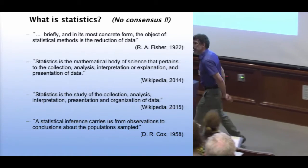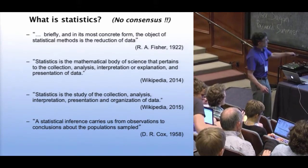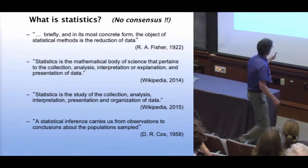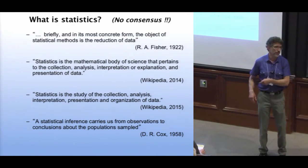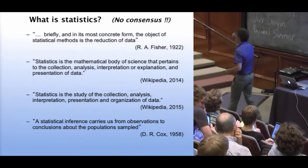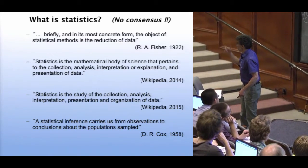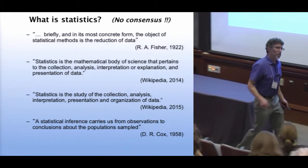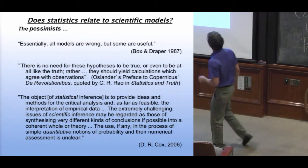Another figure, not quite as famous, is Sir D.R. Cox — still alive, in his 80s, from Oxford. He said back in an early book in the 1950s that 'a statistical inference carries us from observations to conclusions about populations.' The underlying population are all the stars in the galaxy; the sample is your small sample of microlensed, transiting, or radial velocity planets. This Gallup poll problem — going from a small sample to an underlying population — is very relevant to exoplanetary astronomy.